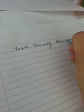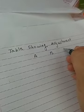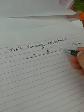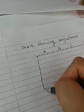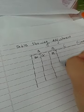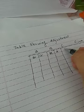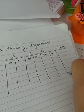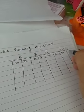Toh yahan hum question continue karte hain. Sabse upar likhenge: 'Table showing adjustment'. Jaise maine aap ko kal bhi format bataya tha — 3 partners hain toh A, B, C karke 3 columns banane hain, phir ek firm ka column banana hai. Aur sabke aap ne debit aur credit columns banane hain. A ke liye debit/credit, B ke liye debit/credit, C ke liye debit/credit, aur firm ke liye debit aur credit.